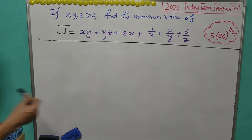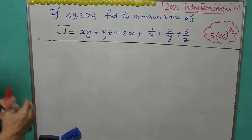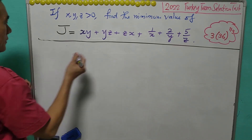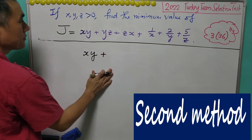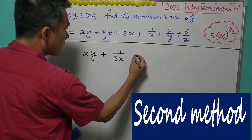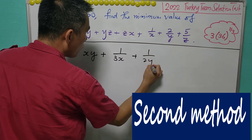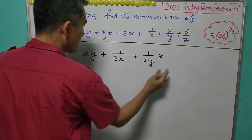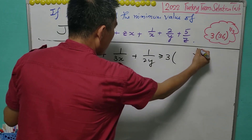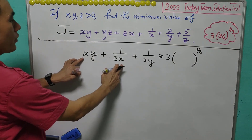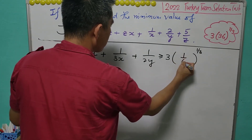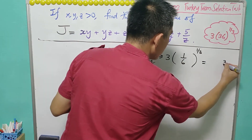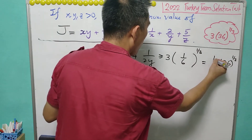From the first method we know this is our answer, and now we try to get it using another method. We consider X over Y plus 1 over 3X plus 1 over 2Y. Using AM-GM inequality, this is greater than or equal to 3 times the product to the power of 1 over 3. The XY terms cancel and we are left with 1 over 6, and this equals 36 to the power of 1 over 3 times 1 over 2.